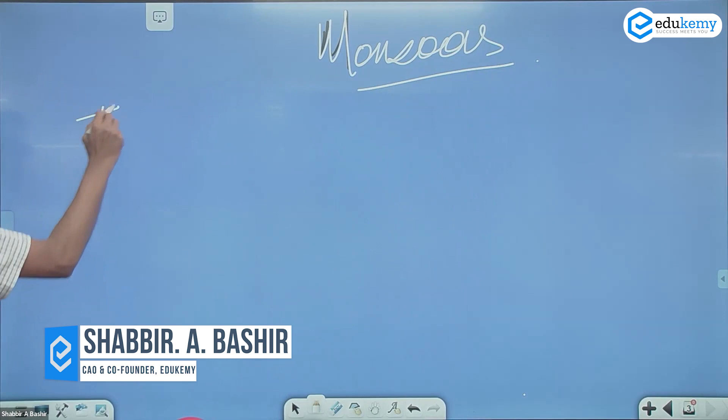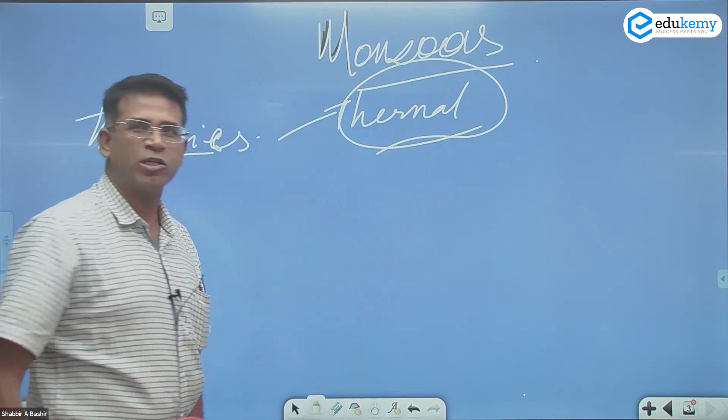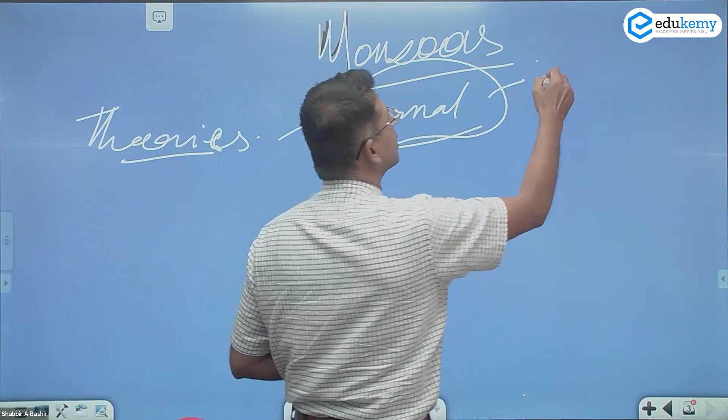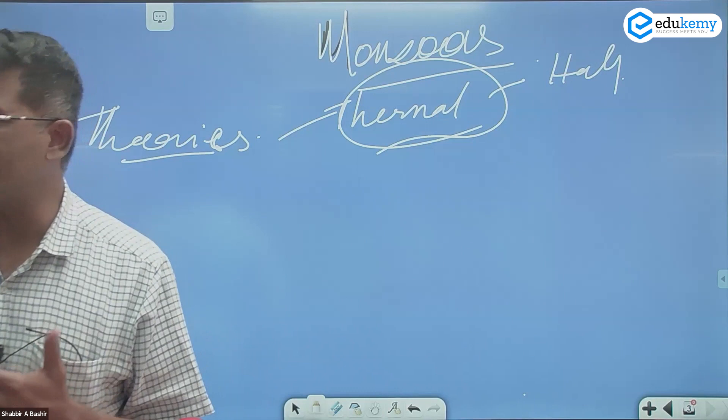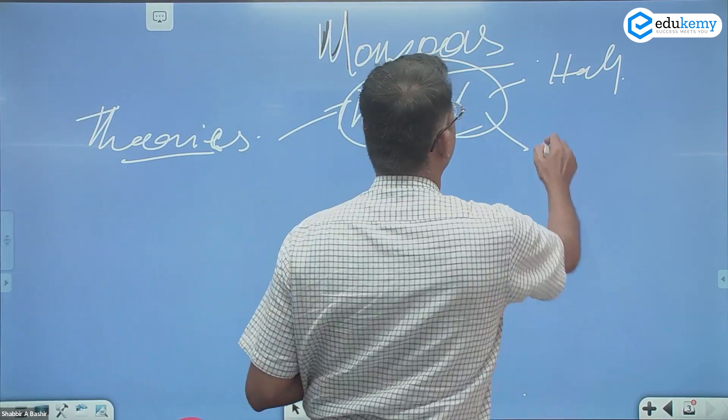So the theories — I'm summarizing, please take it down as I write. Thermal theory: I said don't spend too many words on this, it's a very elementary study. Thermal theory — one is Hadley's model, which talks about land and sea breeze type of phenomena. Monsoons: summers mein land is hot so onshore winds, winters mein land is cold so offshore winds. Its modification is the air mass theory.